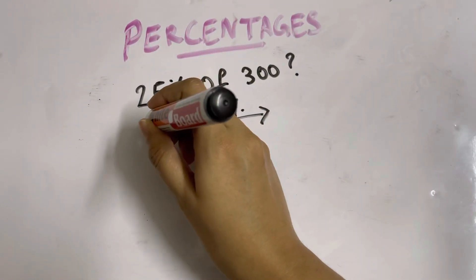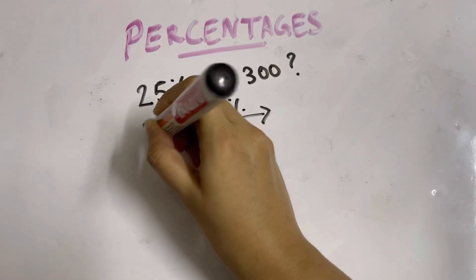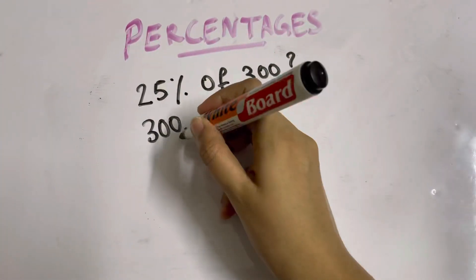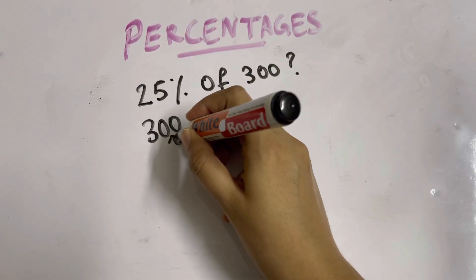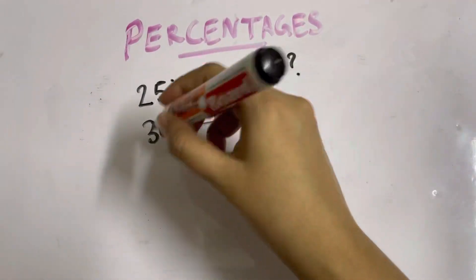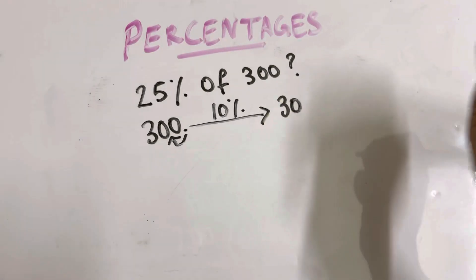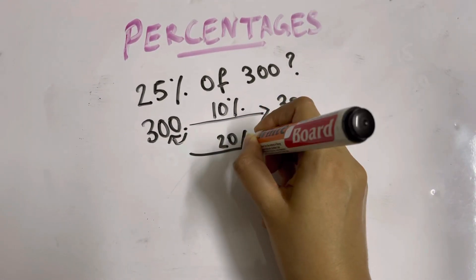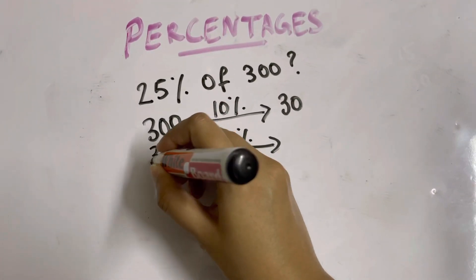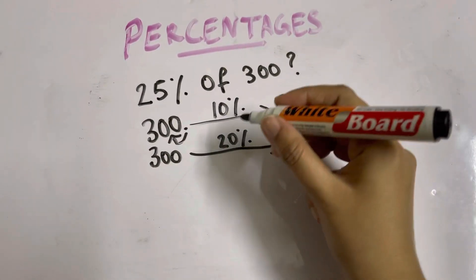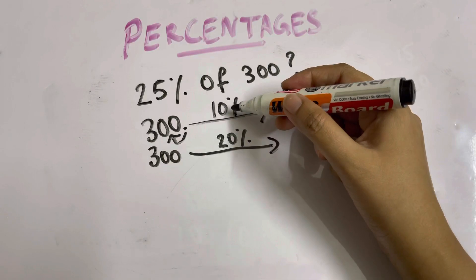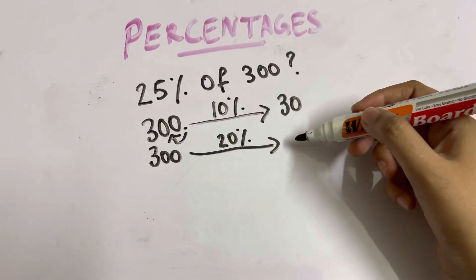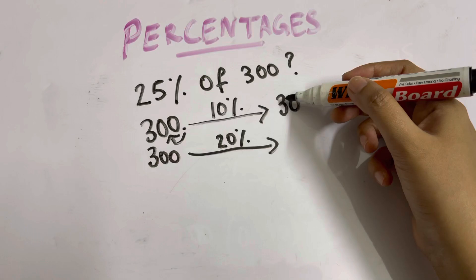10% of 300: take the decimal towards the right and move one slot towards the left, so 10% of 300 is 30. Next, we find 20% of 300. 20% is just twice the value of 10%, so 2 times 30 is 60.